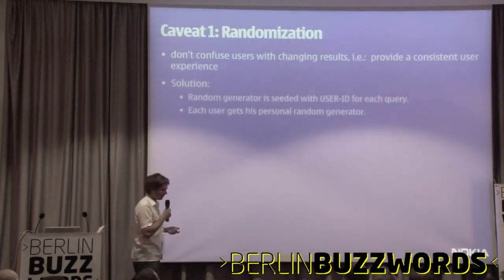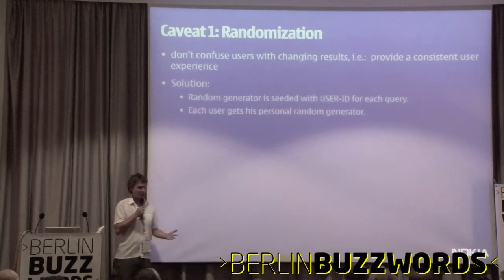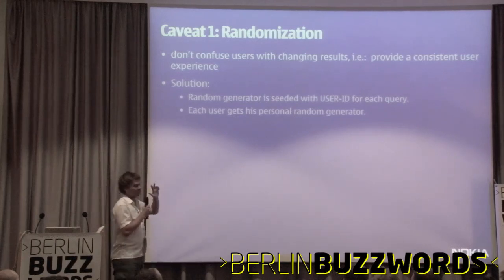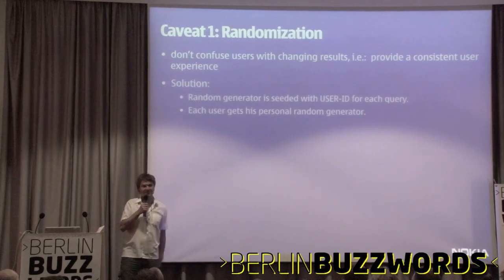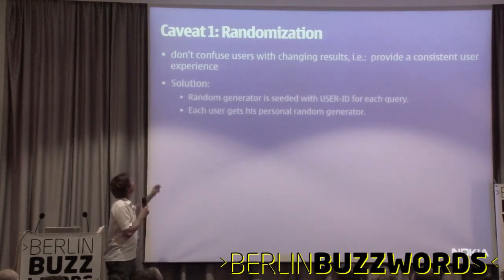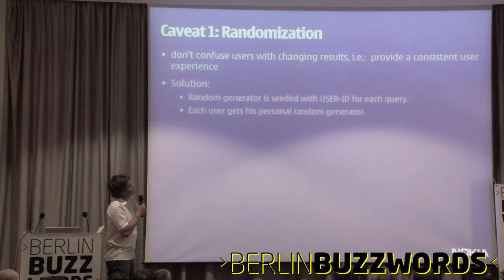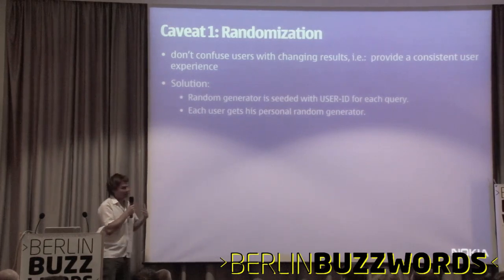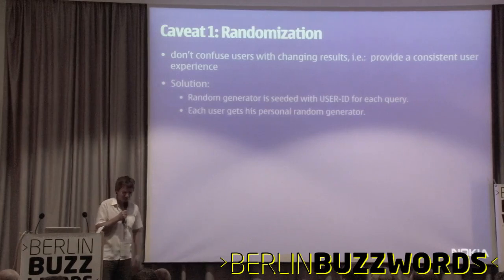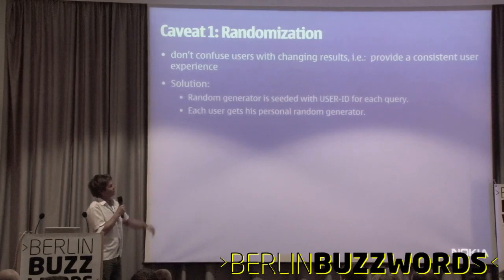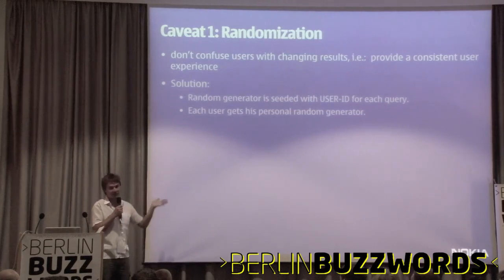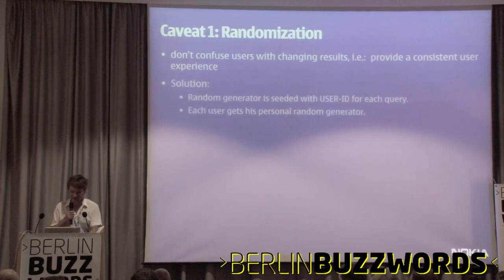There are a couple of caveats you should be aware of if you implement this. First: don't confuse users with changing results — you want to give a stable, consistent experience. You have a random generator in that process when you generate the synthesized list, so what you do is use the user ID to seed the random generator and make it a stable experience.